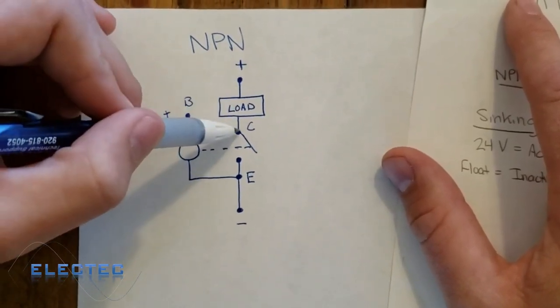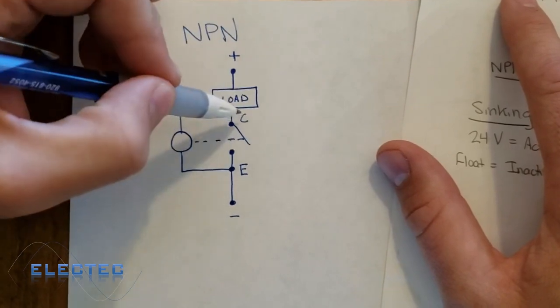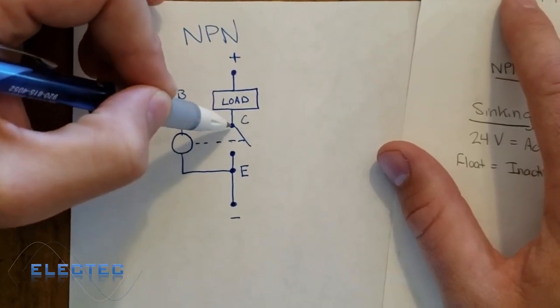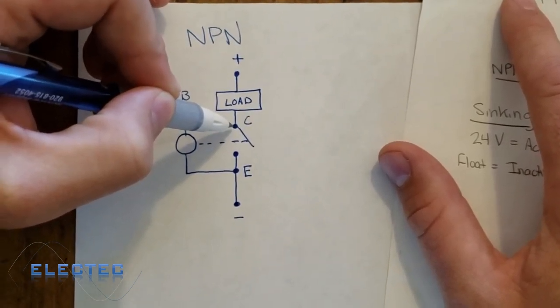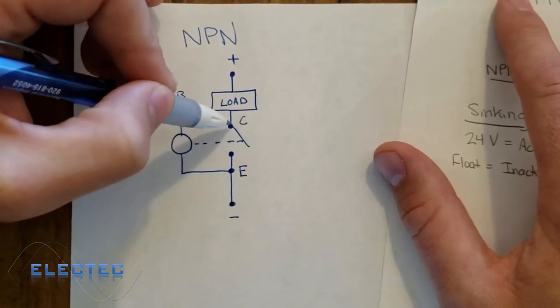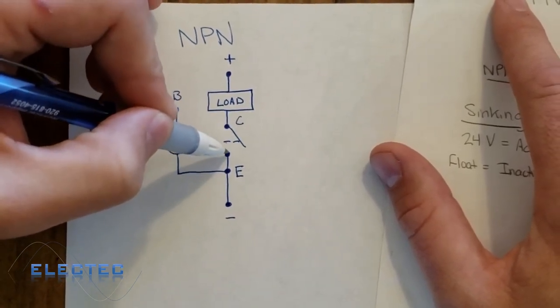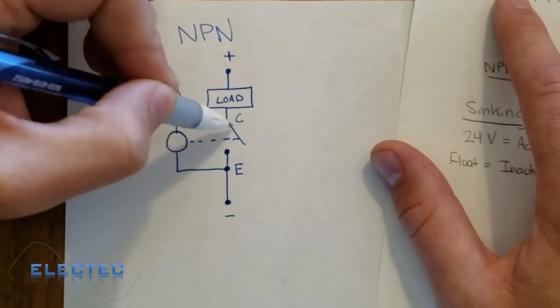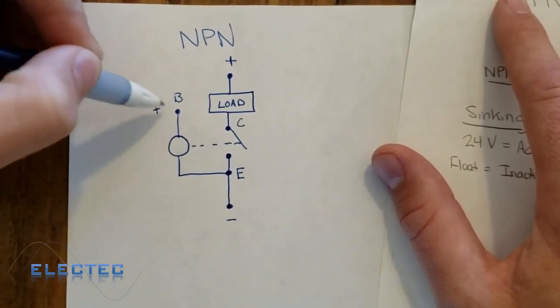So what you can actually see, one thing to remember, like I tried to state before, was that the collector point of this, it's not going to 24 volts and switching back to zero volts. What it's actually doing is zero volts or floating. Zero volts or floating, depending upon the state of this base.